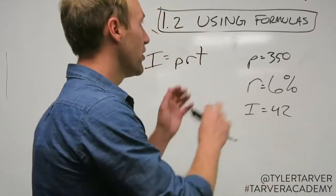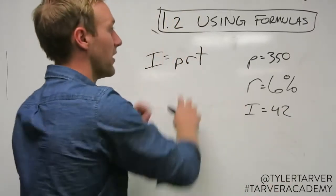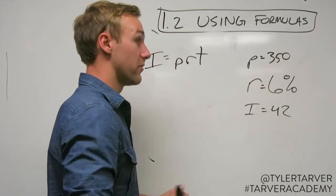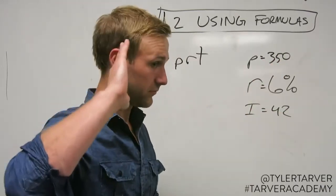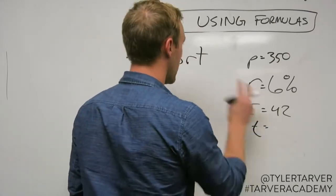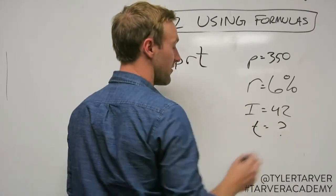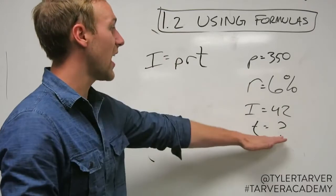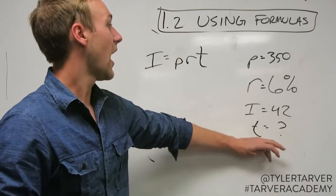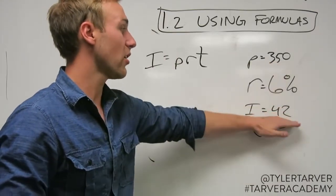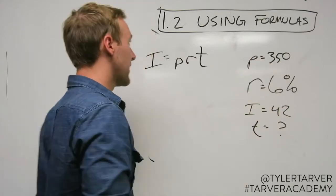So we're using formulas, we're going to use this formula. I've got some information here. What do I not have? T, that's correct. My T I don't have. That's what we've got to find out. We want to find out how much time do we have to have our principal in there before we can earn this much money.